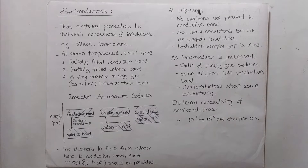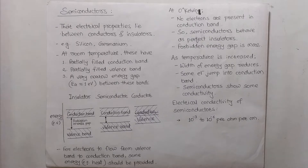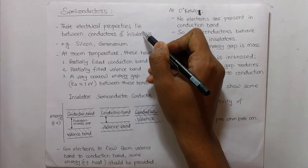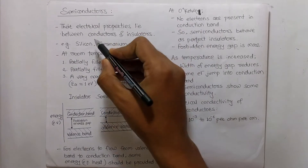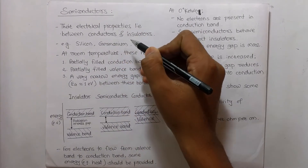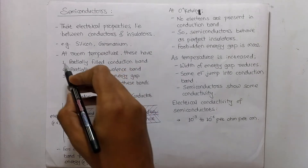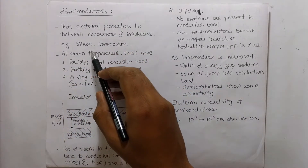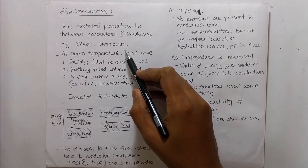Hello friends, welcome to Knowledge Ninja Academy. In this lecture we are going to see semiconductors. Semiconductors have electrical properties which lie in between that of conductors and insulators. For example, one semiconductor is silicon and another is germanium.